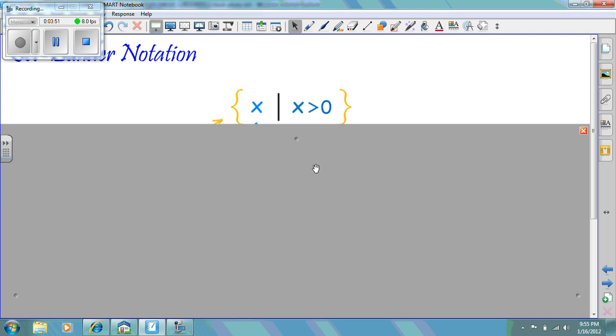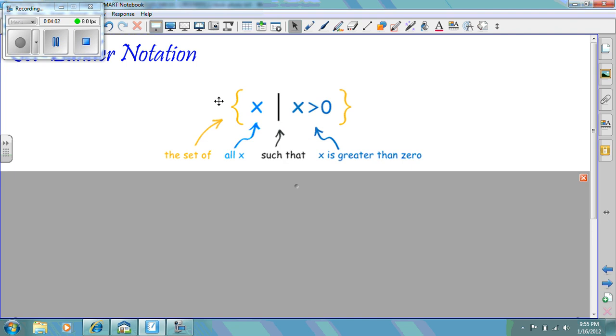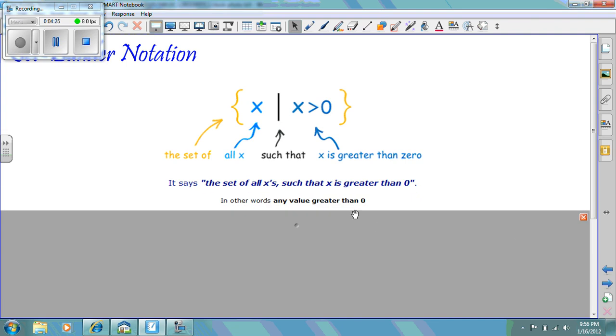You'll see there's lots of symbols there. We have a brace, we have an X, a bar, a vertical bar, an inequality, and then another brace. Well, what do all these symbols mean and what does this set represent? Well, this particular set builder notation problem says the set of, that's where the brace comes from, all X, that's our variable we're looking at, and this vertical line actually stands for such that. We can either use a vertical line or we can use a colon, either one or they're interchangeable. And then we have an inequality here, X is greater than 0. It says, the set of all X's, such that X is greater than 0. Or, in plain words, any value greater than 0 would be that set listed there.